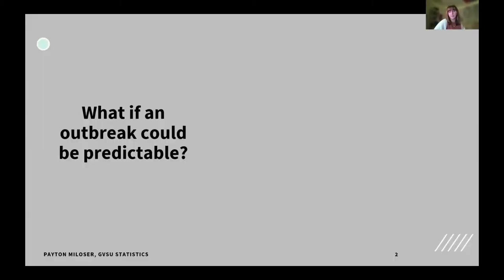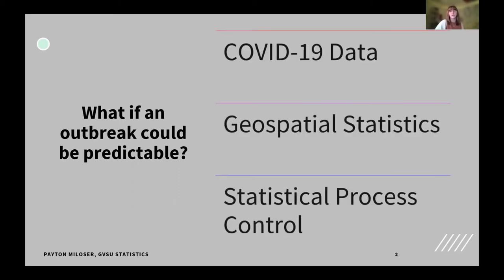What if an outbreak could be predictable? We've been living through a global pandemic and with that came multiple outbreaks of the COVID-19 virus. What if we could have predicted some of those outbreaks ahead of time more efficiently than we currently can? Well, looking at COVID-19 data geospatial statistics and statistical process control, we potentially can.